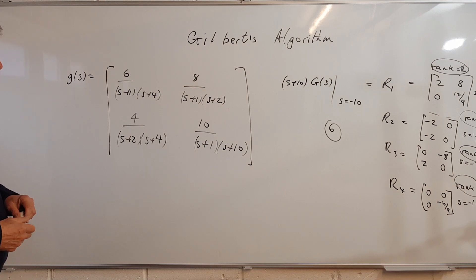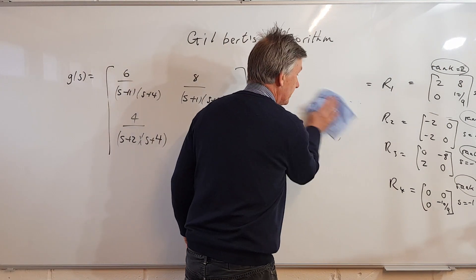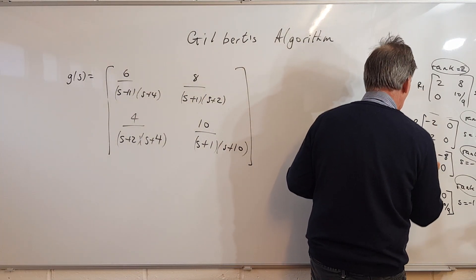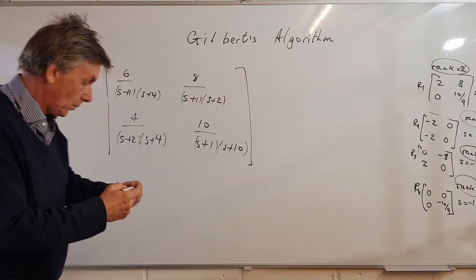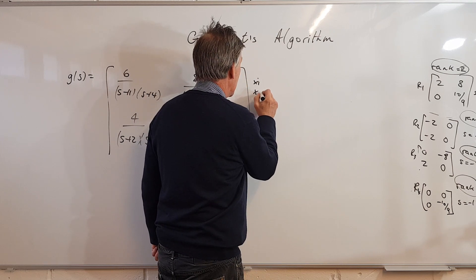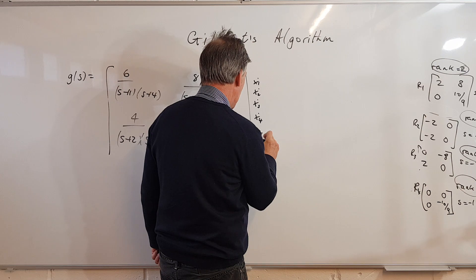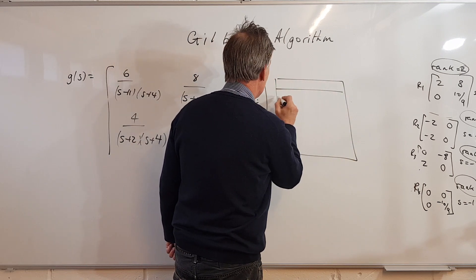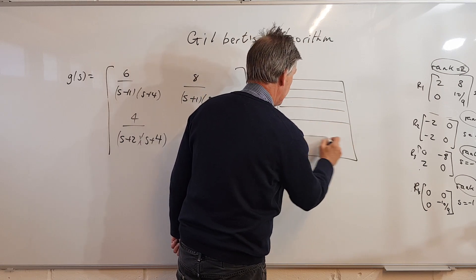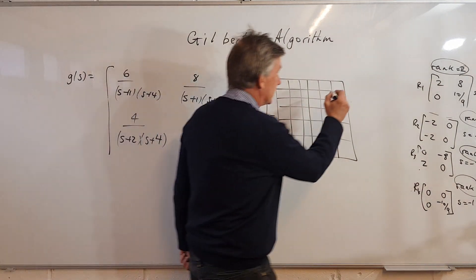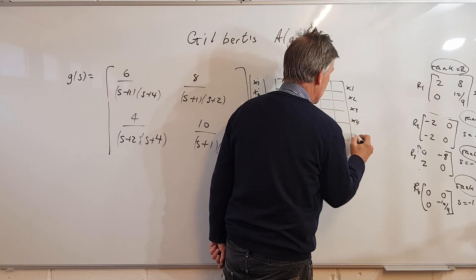This means we can represent the system with a state-space representation using a 6×6 state matrix. So our state equations will have 6 states: ẋ1, ẋ2, ẋ3, ẋ4, ẋ5, ẋ6, equal to some 6×6 A matrix times [x1, x2, x3, x4, x5, x6]ᵀ.